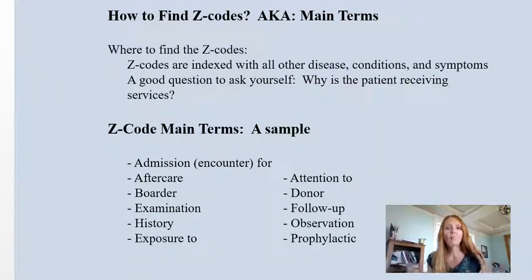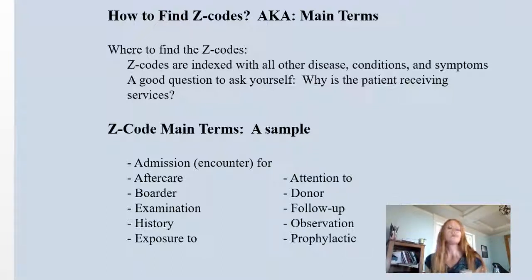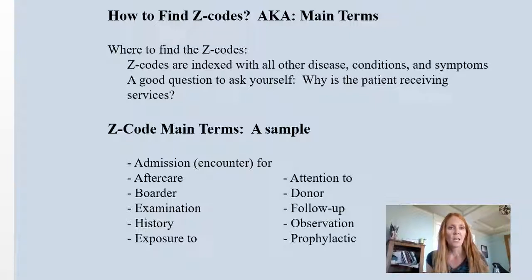So how are some ways you can look up Z codes? You have to stop and ask yourself what the patient is here for. Here are just a few examples of terms you can use — this isn't all-inclusive, but these are good ways to start: admission for, aftercare, encounter, examination, history, exposure to, attention to, donor, follow-up, observation, and prophylaxis. Those are just some main terms you can try to look up in the index.